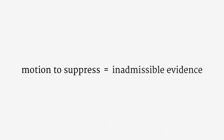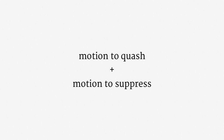A motion to suppress is also straightforward — it means, simply, that evidence should not be admissible at trial. Once again, this is a procedural vehicle, and there have to be specific grounds for suppression. We'll see how a criminal defendant, for example, might be able to suppress evidence when police conduct a search without a warrant. It's important to note that suppression is solely about using evidence in a case; the evidence can be used in other contexts, including public relations and policymaking. These motions are often paired together — when contesting surveillance in a criminal case, a defendant will try to invalidate the surveillance order and have the surveillance evidence ruled inadmissible because it was collected under an invalid order. Those two challenges are quashal and suppression.